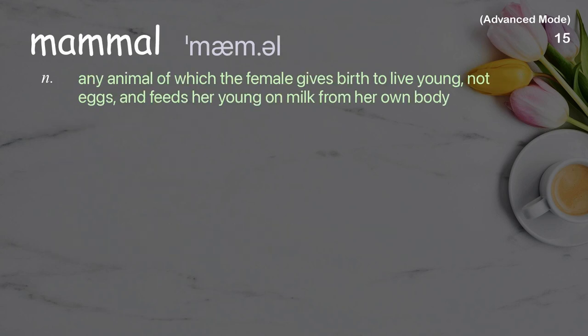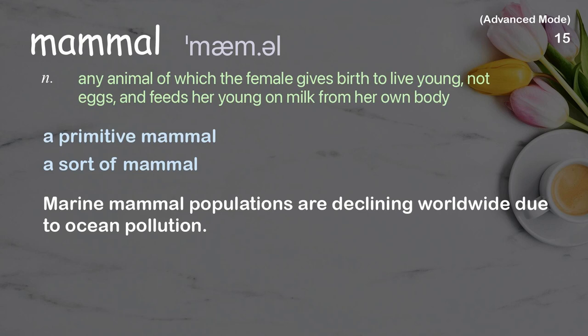Mammal: any animal of which the female gives birth to live young, not eggs, and feeds her young on milk from her own body. Examples: a primitive mammal; a sort of mammal. Example sentence: Marine mammal populations are declining worldwide due to ocean pollution.